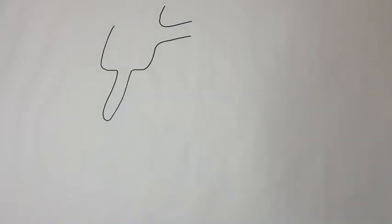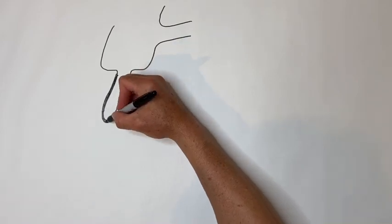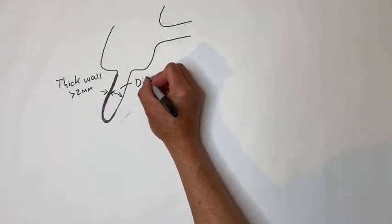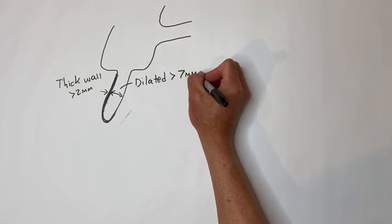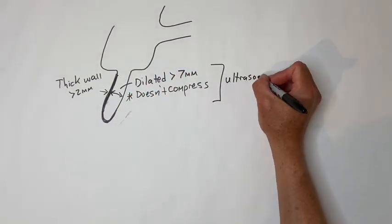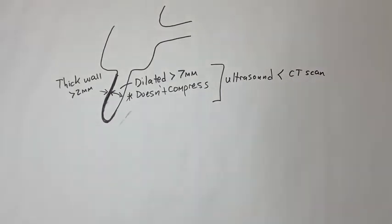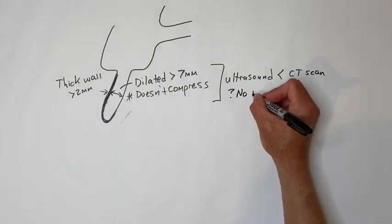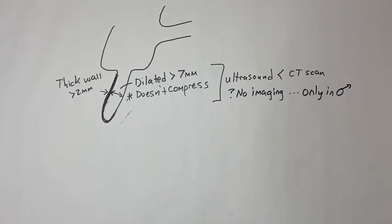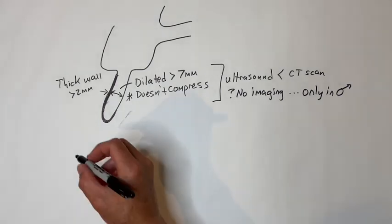Appendicitis is diagnosed on ultrasound as a thick-walled — over two millimeters — dilated over seven millimeter non-compressible structure in the right lower quadrant. The most sensitive and specific test is a CT scan. Classic symptoms in a male may not need any imaging, although at least an ultrasound is reasonable because terminal ileal Crohn's disease can sometimes be mistaken for appendicitis.